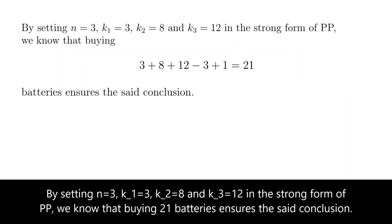By setting n equals to 3, k1 equals to 3, k2 equals to 8, and k3 equals to 12 in the strong form of pigeonhole principle, we know that buying 21 batteries ensures the said conclusion.